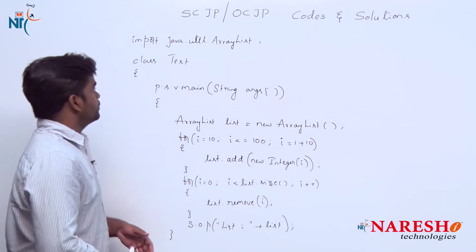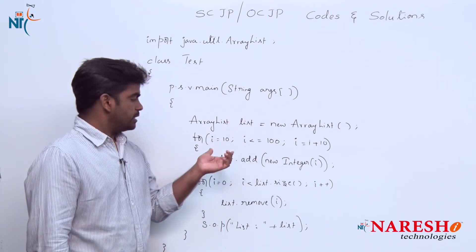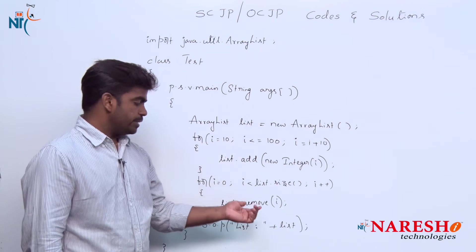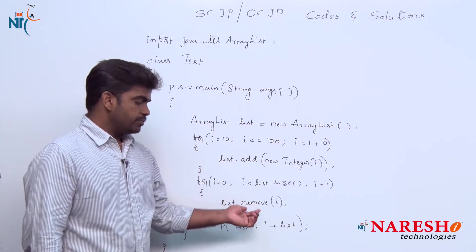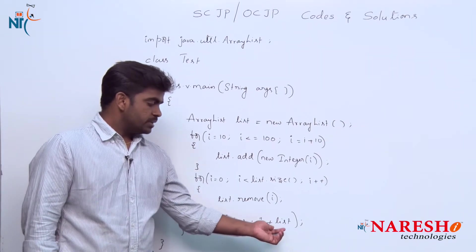Here is the code. This code represents creating an object for ArrayList, storing some elements, and with the help of the remove method, deleting some of the elements from the ArrayList. Then we are printing the final list.